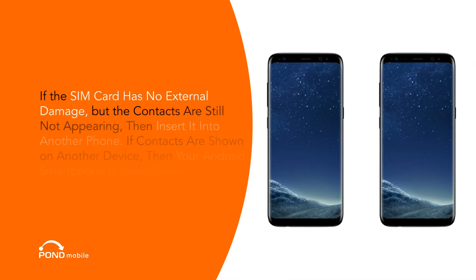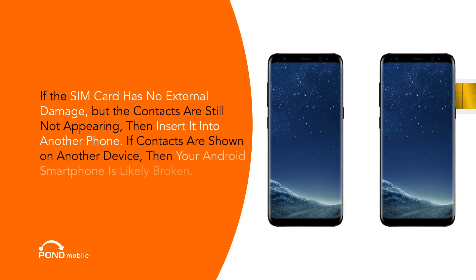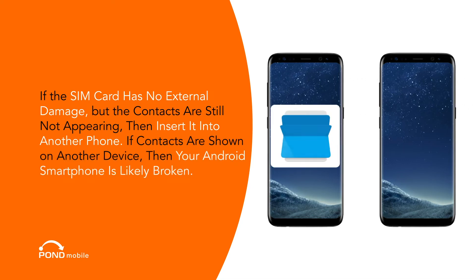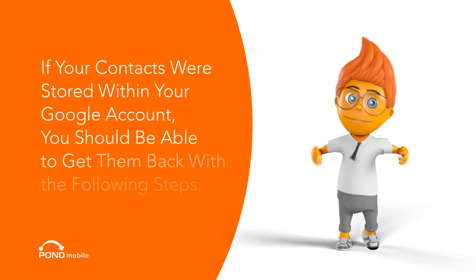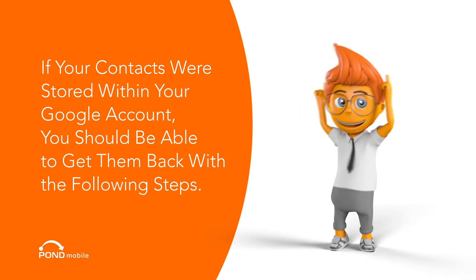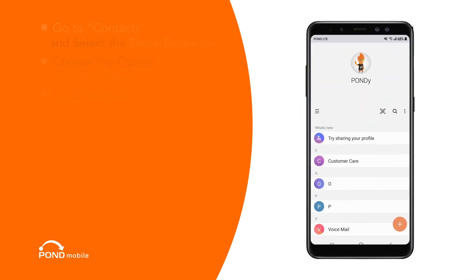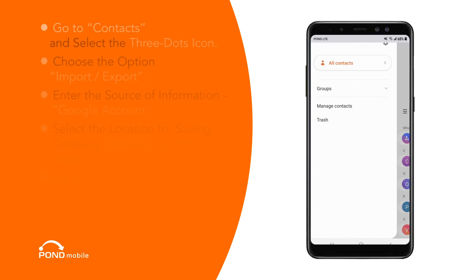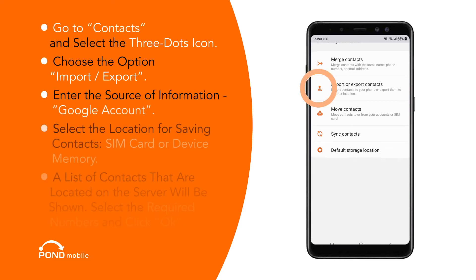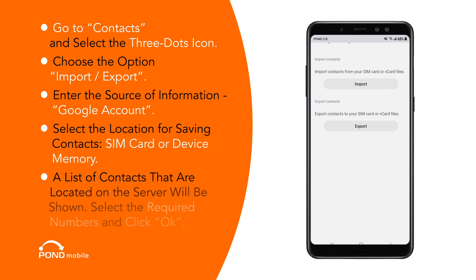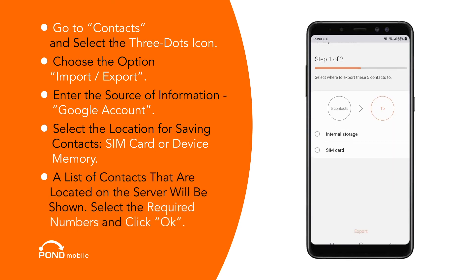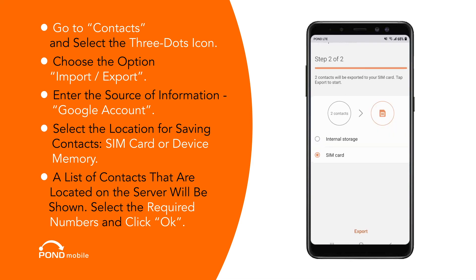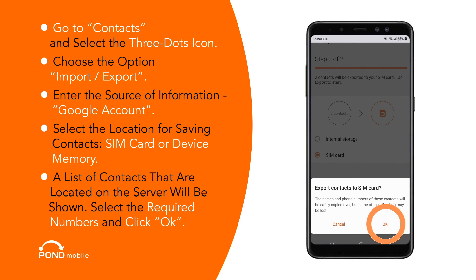If the SIM card has no external damage but the contacts are still not appearing, then insert it into another phone. If contacts are shown on another device, then your Android smartphone is likely broken. If your contacts were stored within your Google account, you should be able to get them back with the following steps: Go to Contacts and select the three dots icon. Choose the option Import-Export. Enter the source of information — Google account. Select the location for saving contacts — SIM card or device memory. A list of contacts that are located on the server will be shown. Select the required numbers and click OK.